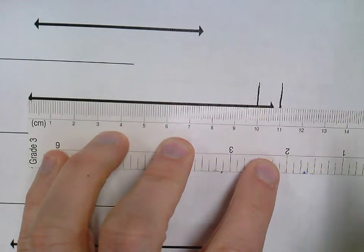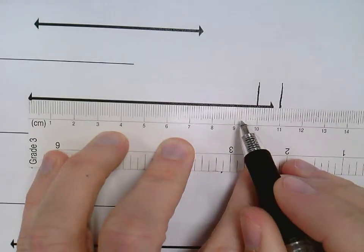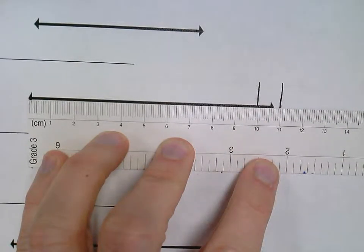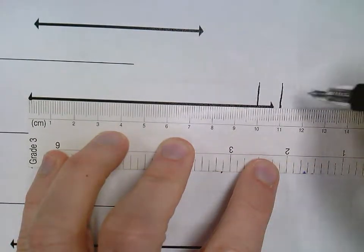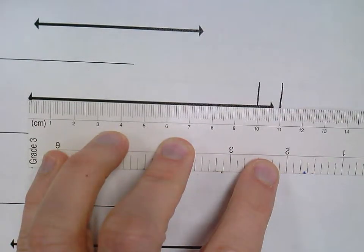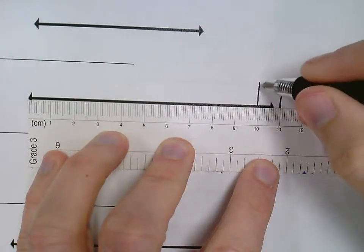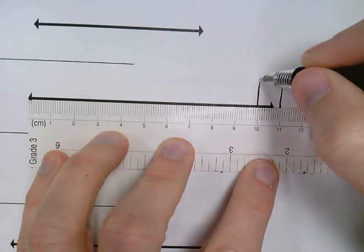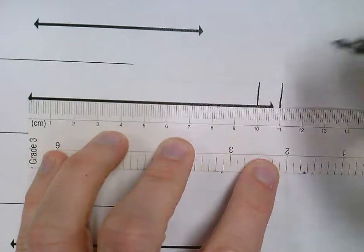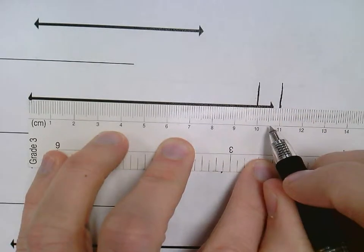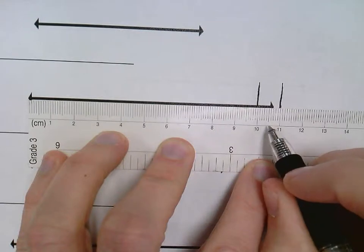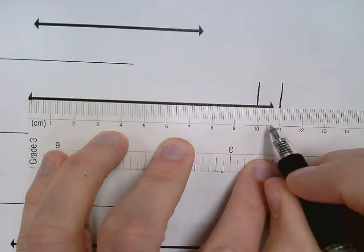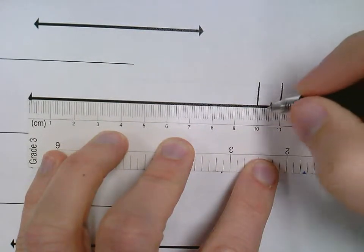Now between our centimeter lines, you notice all these shorter lines—those shorter lines are millimeters. So 10 millimeters makes up one centimeter. We build the sides of our road that's one centimeter wide and then we put the center of our road. Now the center of our road is going to go on this little bit longer line there, and that's just the halfway point between the centimeters.